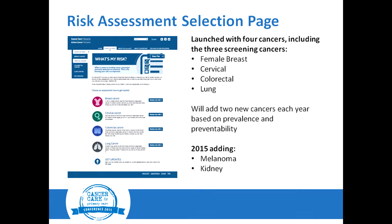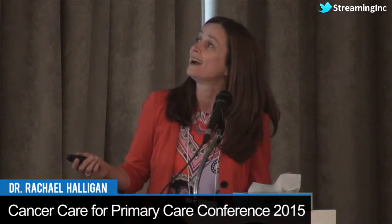It doesn't just stop there. It then tells them, this is what you're doing right, this is why you're at low risk. Or it'll say, this is why you're at high risk and this is what you can do about it. Then it says go talk to your primary care practitioner about it — print this off and take it in. So it's wise that you know about it. I had my dad and mom go through it.